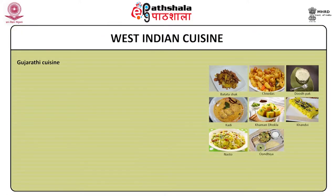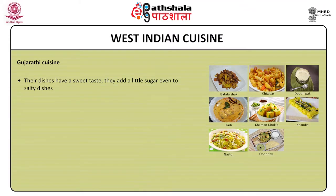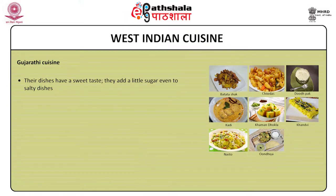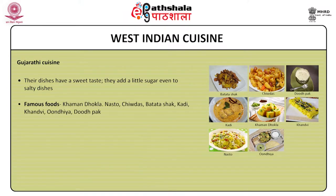West Indian cuisine: Gujarati cuisine. It is the haven of vegetarians. Their dishes have a sweet taste; they add a little sugar even to salty dishes. Millet, barley and wheat are widely used. Khaman dhokla, a steamed dish, is highly popular. Nasto is made from Bengal gram flour mixed with an assortment of spices and then fried. Shivdas are also popular. Other Gujarati dishes include batata shak, khadi, sandvi, undhiyu, doodh pak etc.